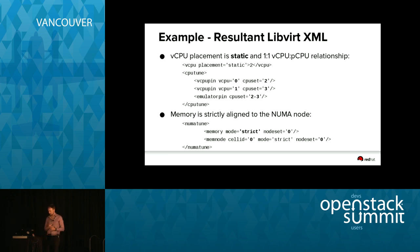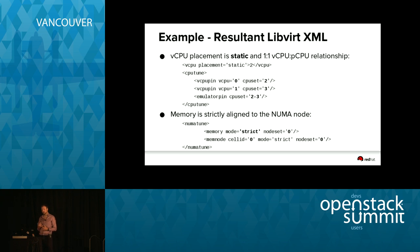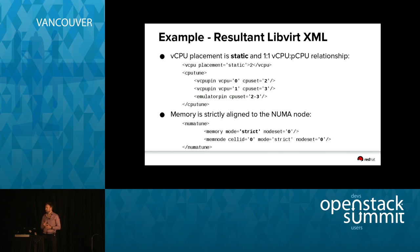We also have the emulator thread pinned — an additional QEMU process associated with the guest — currently pinned to the union of the allocated CPUs, so it will still move between those two cores. That's something we may look at tuning further in the future, but it's the default implementation for now. Further down in the output, the memory is strictly aligned to the NUMA node — this works when in KVM mode, not QEMU emulation. The memory backing for this guest is pinned to node zero as well.